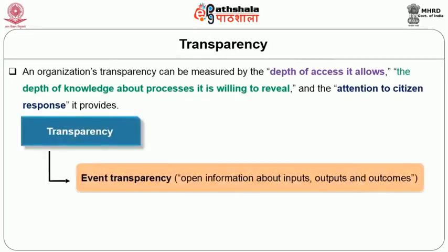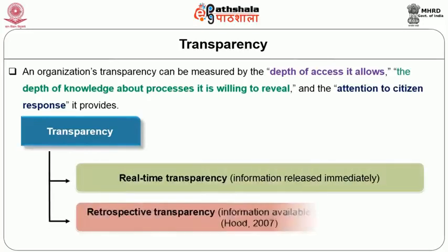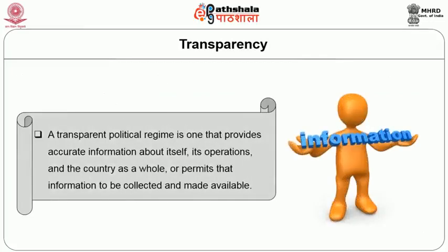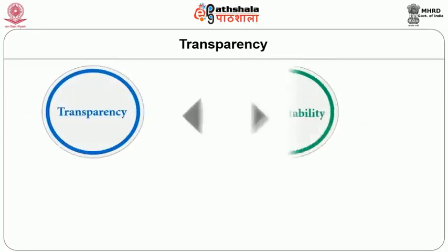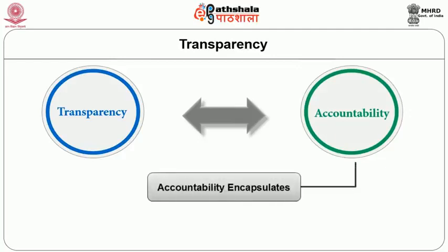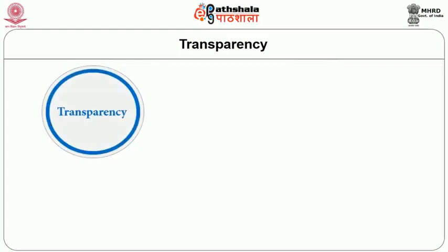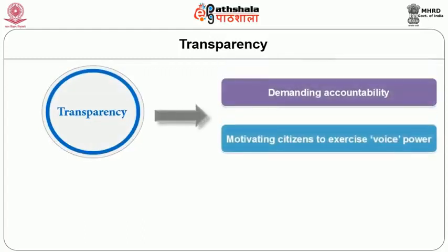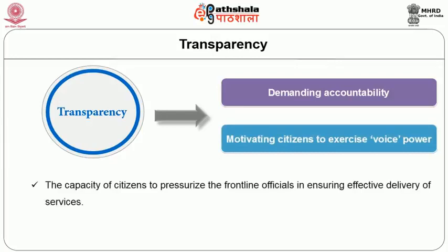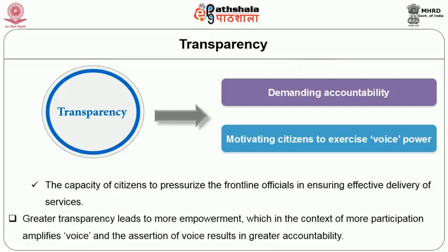Transparency as a concept covers events transparency, process transparency, real-time transparency and retrospective transparency. Transparency and accountability are reciprocally supporting. The term accountability encapsulates three main elements: answerability, enforcement and responsiveness. Transparency of information is instrumental for demanding accountability and for motivating citizens to exercise voice power, i.e. the capacity of citizens to pressurize frontline officials in ensuring effective delivery of services. Thus, greater transparency leads to more empowerment which, in the context of more participation, amplifies voice, and the assertion of voice results in greater accountability.